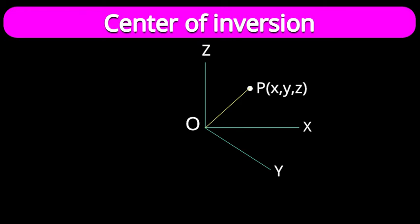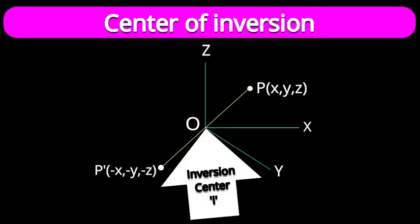Mathematically, consider a three-dimensional Cartesian coordinate system and a point (x, y, z). That point will get inverted and its new coordinates will be (-x, -y, -z). The point which serves as the origin in this transformation is called the center of inversion.